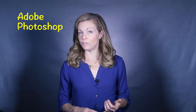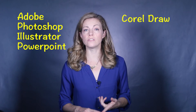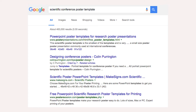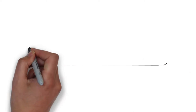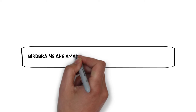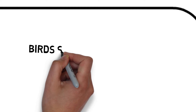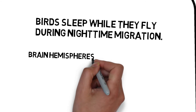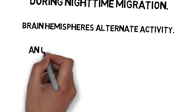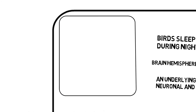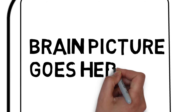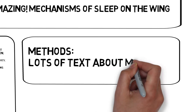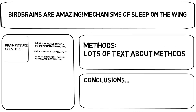Some examples are Adobe Photoshop, Illustrator, PowerPoint, or CorelDRAW. Additionally, there are now websites that specifically focus on helping scientists produce posters. If you are a more tactile type of person, draw your layout out by hand before jumping to software. Also, consider printing out the various sections to see what they will look like from far away before you finalize your design.